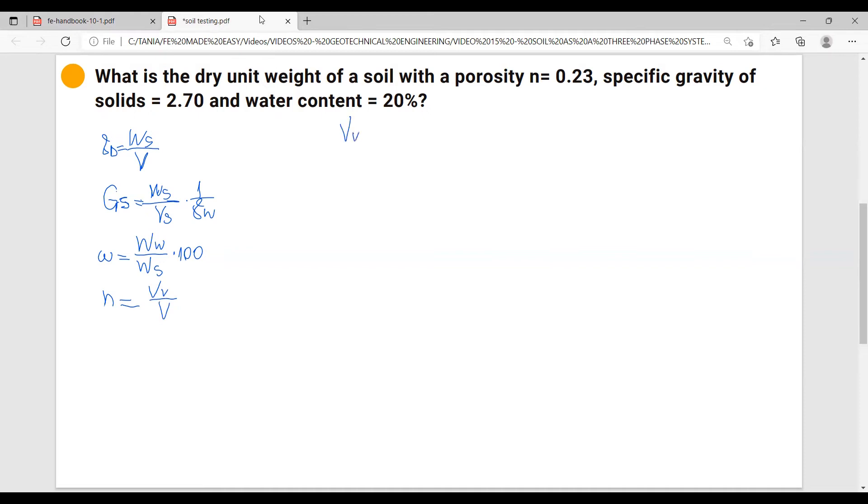So I was talking about the different approach and this is the approach we're going to do. The porosity, which is volume of voids over volume, equals to 0.23. Now let's say volume equals to one cubic foot. This means that if the volume is one cubic foot, our volume of voids equals to 0.23 cubic feet.